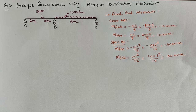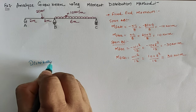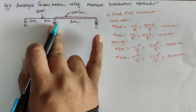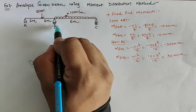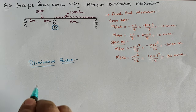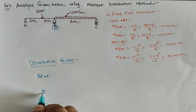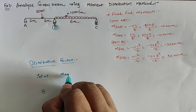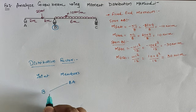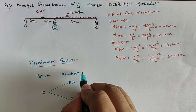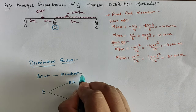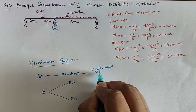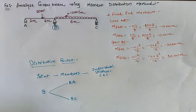The second step is to find out the distribution factor. For calculating the distribution factor we focus on the intermediate joint, which is joint B. Joint B consists of members BA and BC. The next step is to calculate the individual stiffness, denoted by k.